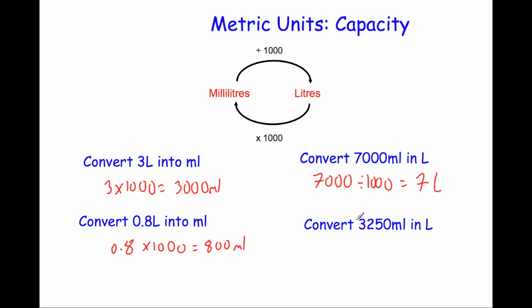And finally change 3,250 millilitres into litres. To change from millilitres into litres we divide by 1000. So 3,250 divided by 1000. When we're dividing by 1000 we're going to move the digits three places to the right. So it'll become 325, 32.5, 3.25. So 3.25 litres. And that's it.